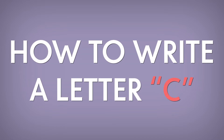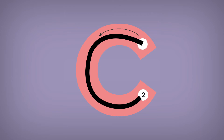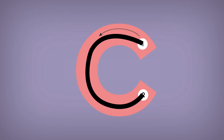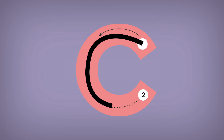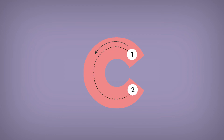And now let me show you how to write letter C. Big letter C: start at the top and go around to the bottom. Small C: start in the middle and go around to the bottom.